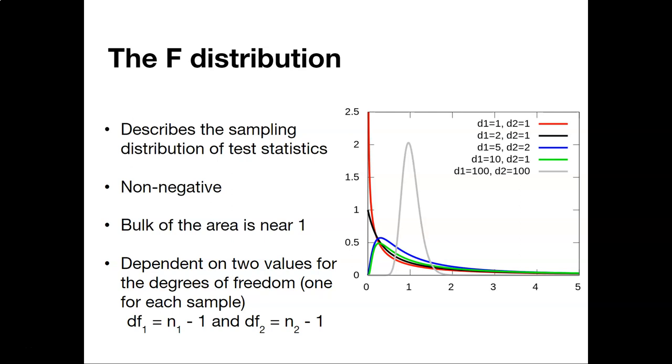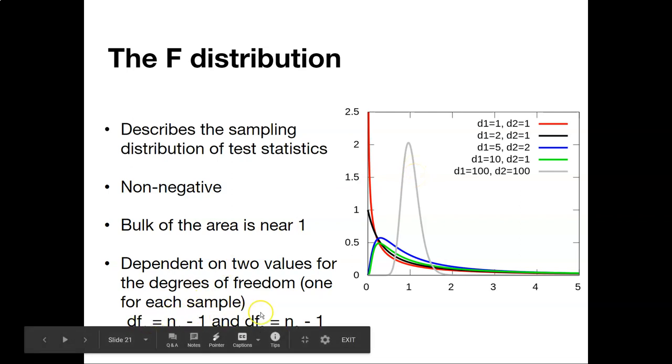This distribution is commonly used in the analysis of variance, a topic we'll talk about in more depth later in the class. The distribution's peak happens just to the right of zero, and the higher the value of F, the lower the curve. This distribution always has a value greater than zero. Most of the area is near one, and it depends on two different degrees of freedom: the degrees of freedom for population one and the degrees of freedom for population two.